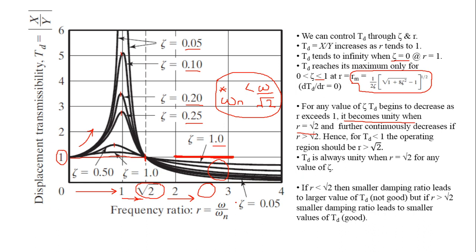We conclude that displacement transmissibility is most important for underdamped cases because they are likely to have the maximum peaks. If you are operating at r greater than √2, your displacement transmissibility will always be less than one, irrespective of the damping value. Your natural frequency must satisfy the relationship omega_n less than omega/√2 in order to be in this favorable region, irrespective of the damping coefficient. We end today's lecture here and will meet again in the next lecture. Thank you.